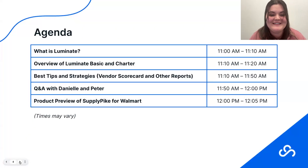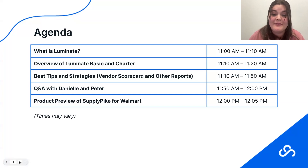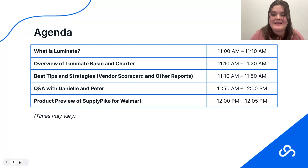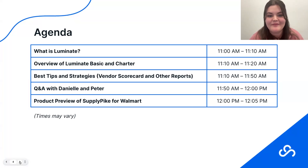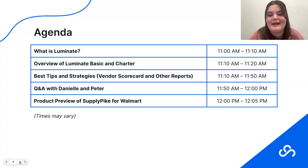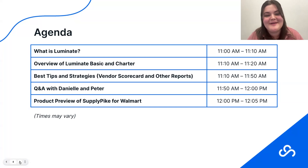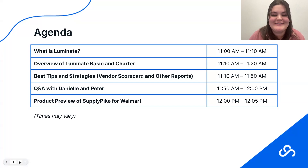Moving on to the agenda, we have a packed one for this hour. We are going to start off going over an introduction to Luminate and how it impacts suppliers. Then we will do a comparison between Luminate Basic and Charter, seeing the different features the free version offers versus the paid version. After that, we'll move on to the best tips and strategies for pulling different kinds of reports in Luminate. We'll be opening the floor for Q&A, and then we'll wrap up with a product preview of Supply Pike for Walmart.